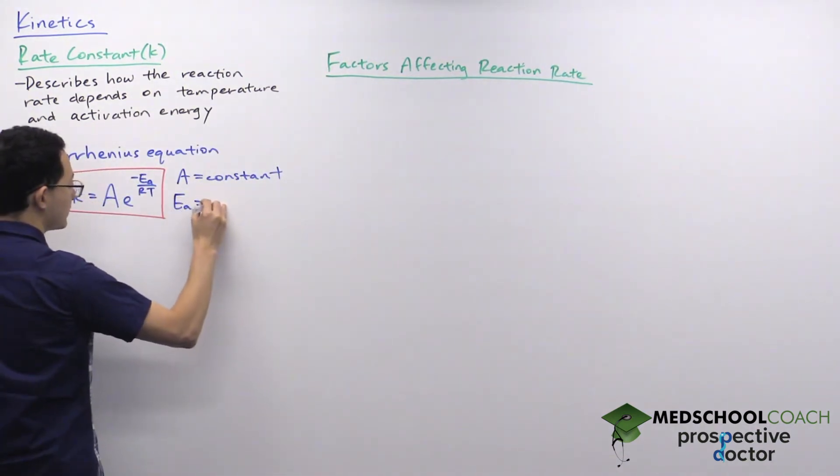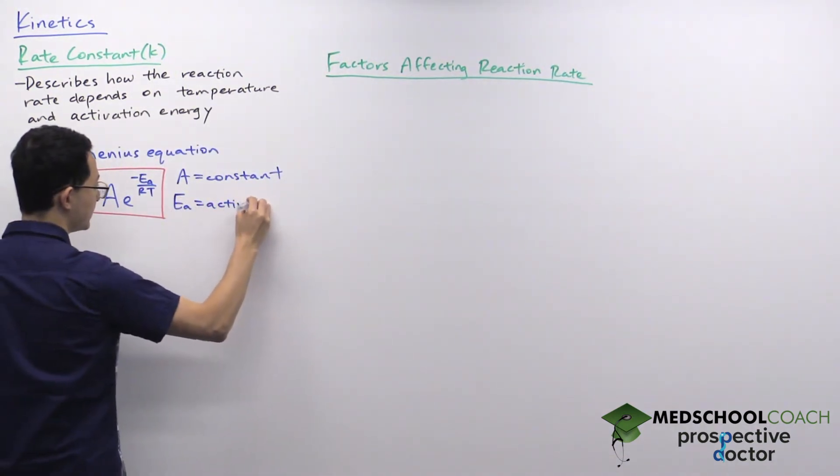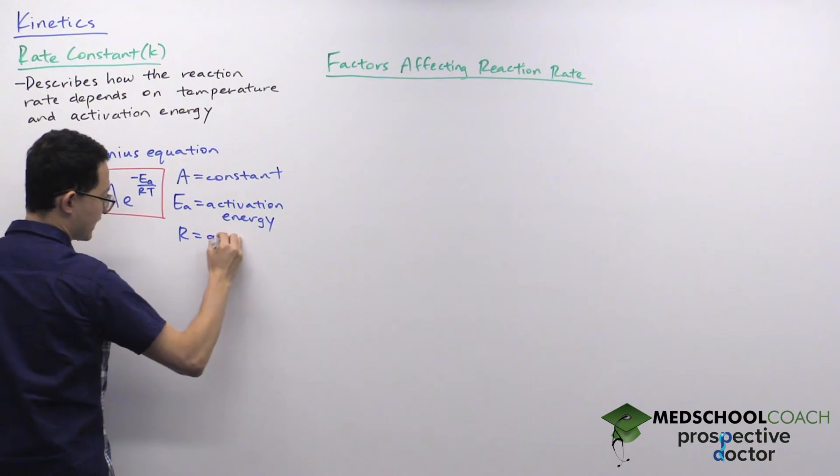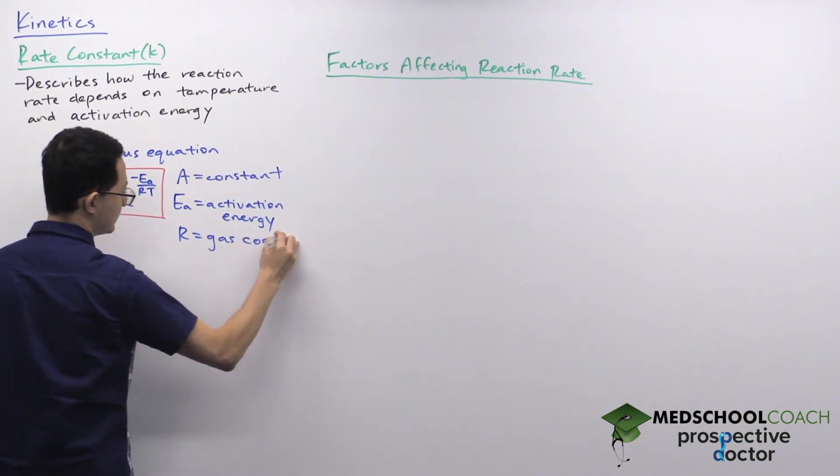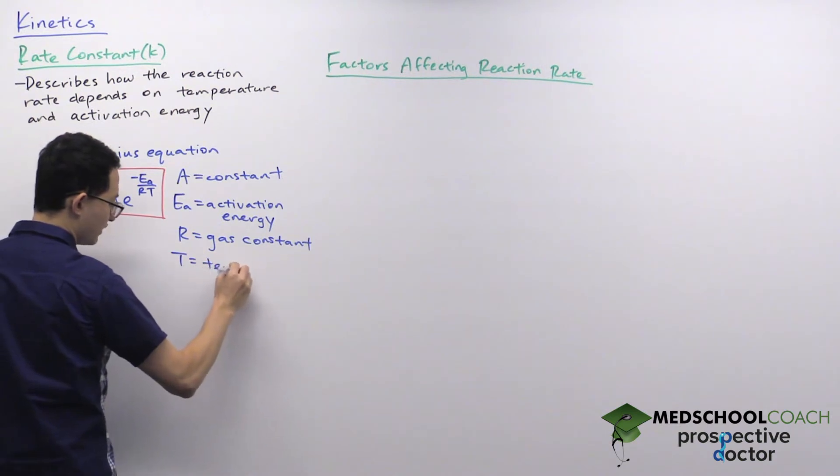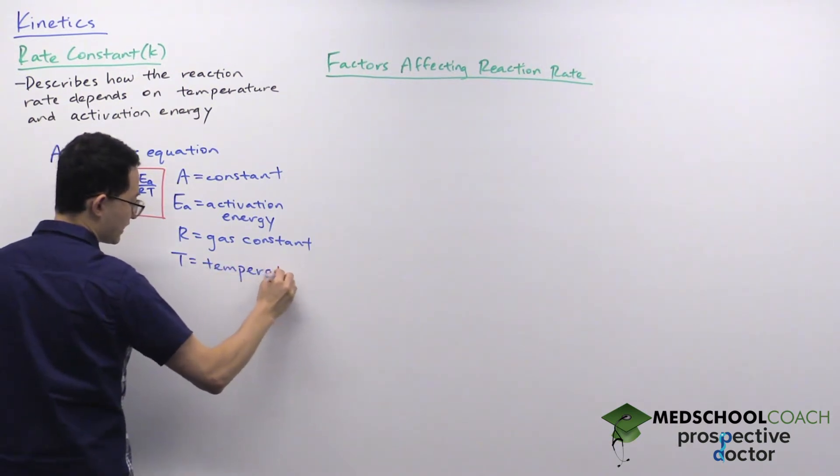Ea we've discussed before, this is the activation energy. R we've also seen before, this is the gas constant. And T we've also seen before, T is the temperature.